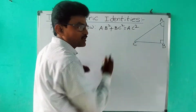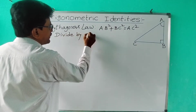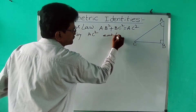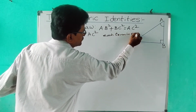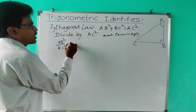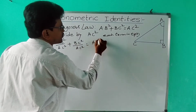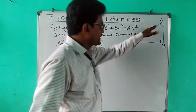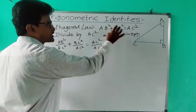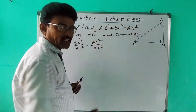Now divide this entire equation by AC² on both sides. So we get: AB²/AC² + BC²/AC² = AC²/AC². We are dividing each term in the equation by AC².